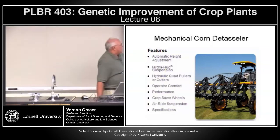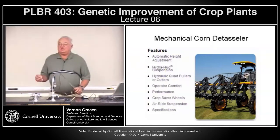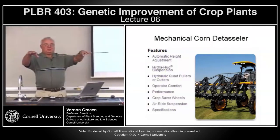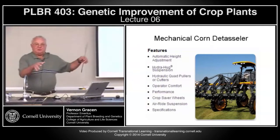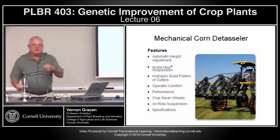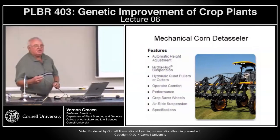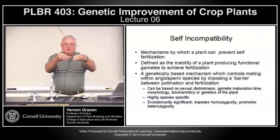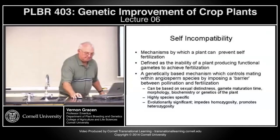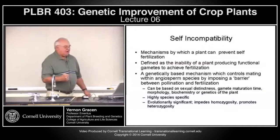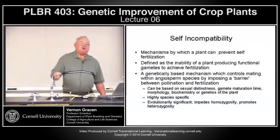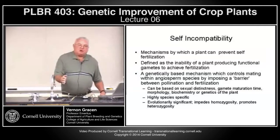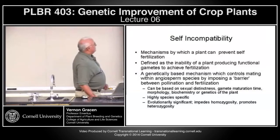In maize hybrid production, detasseling used to employ high school workers riding wagons behind tractors, pulling tassels out of female plants as they rode through the field. Now machines adjust height to where tassels are on the female plants, and rolling wheels grab and pull tassels out. These mechanical methods of producing crosses will be revisited when discussing hybrids. For the rest of today, we'll discuss self-incompatibility and male sterility.